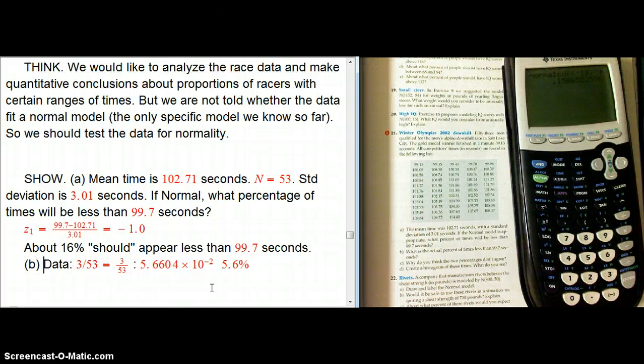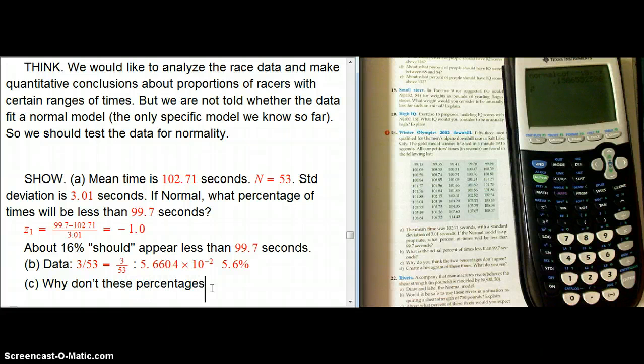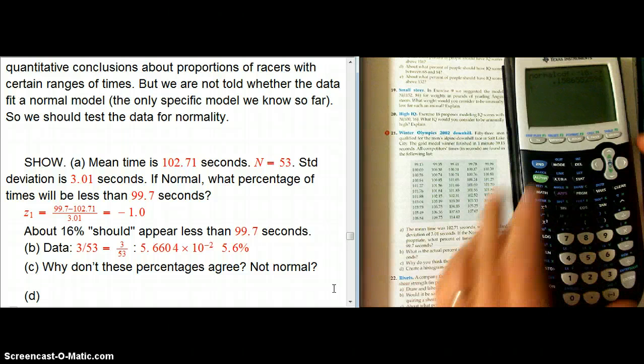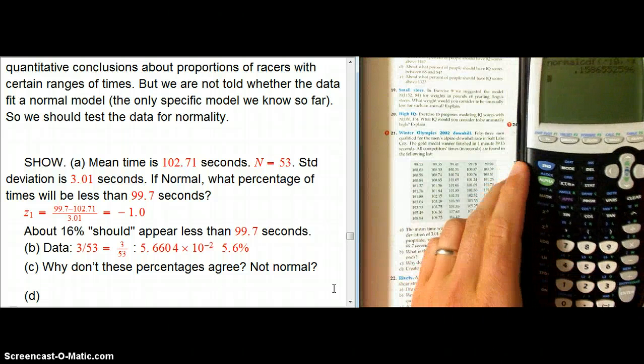So C asks, why don't these percentages agree? And you probably got a hint from how I've been setting this up. Maybe the data is not normal. There's nothing that told us that this data should be normal. So maybe it's not normal. Well, now we really should do some testing.